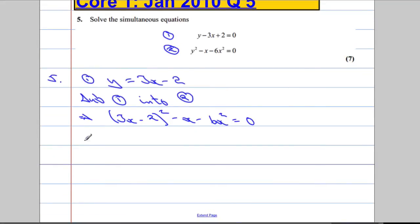So we're just going to do a little bit of algebra here, expand out this bracket. When I expand this out we're going to get 9x squared, 3x times negative 2, negative 6, double it, negative 12x and then negative 2 squared, positive 4. We still have that minus x there and we still have the minus 6x squared. That's going to be equal to 0.